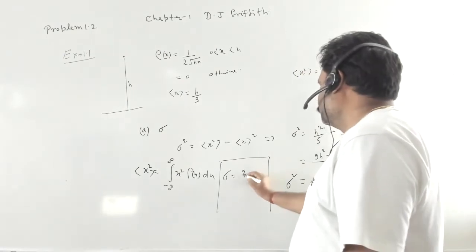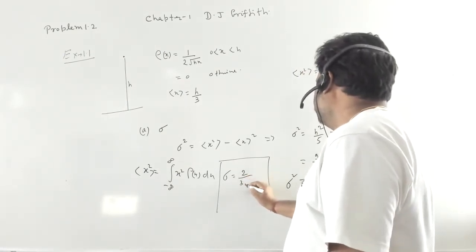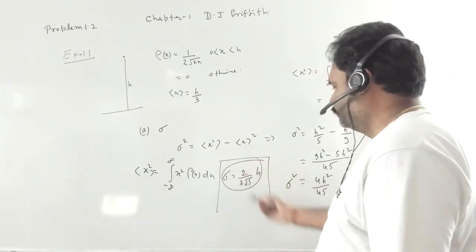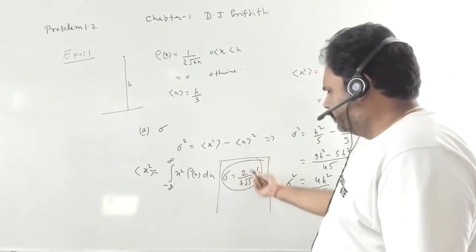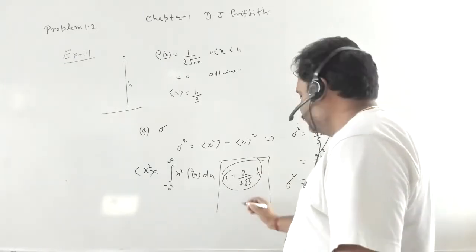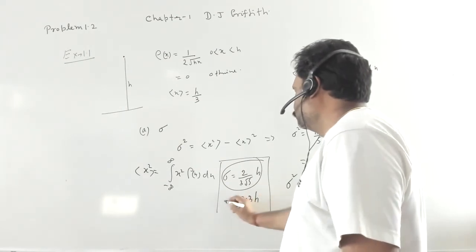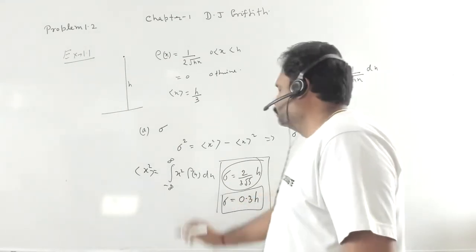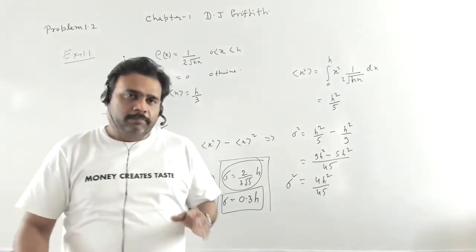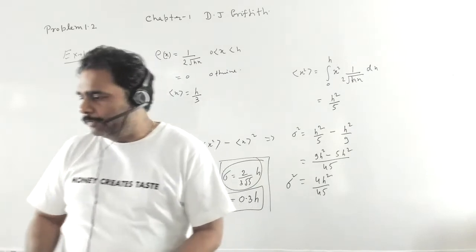The standard deviation σ is the square root of the variance, which gives σ = 2/(3√5) · h. We can also express this as approximately 0.3h. This represents the error in the measurement of x, completing part (a) of the problem.